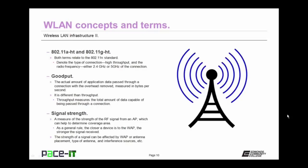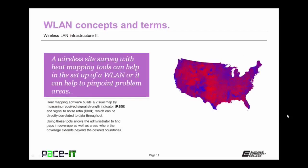Then we have signal strength. It's a measure of the strength of the radio frequency signal that comes from an access point, which can help to determine the amount of area that can be covered by that access point. As a general rule, the closer a device is to the wireless access point, the stronger the signal received. This strength of signal can be affected by wireless access point or antenna placement, the type of antenna used, and interference sources that may be present. A wireless site survey with heat mapping tools can help in the setup of a high quality wireless LAN, or it can help you pinpoint problem areas within your network.